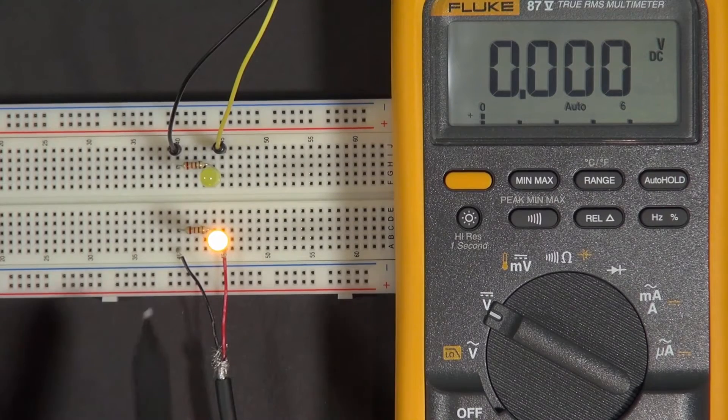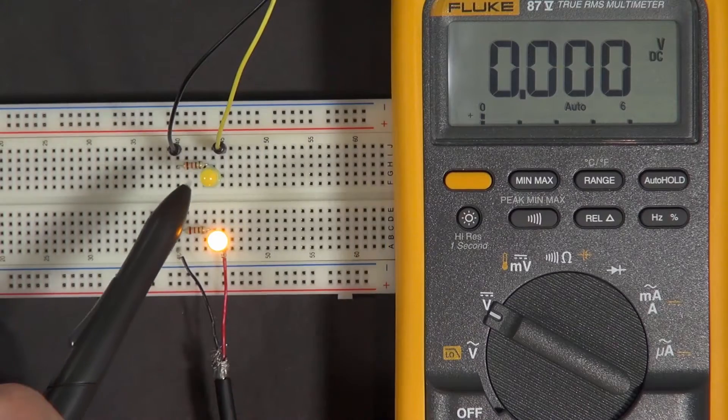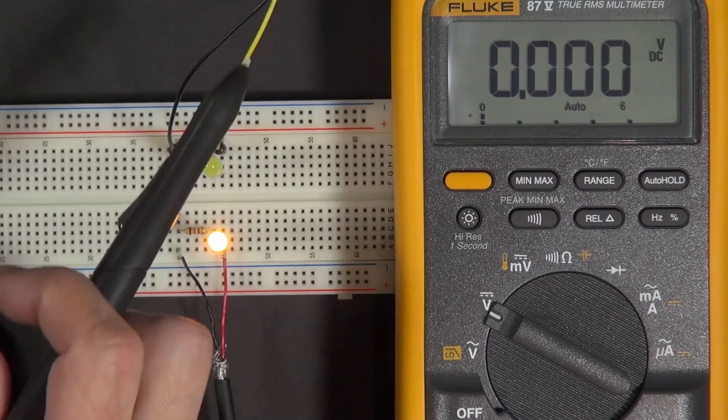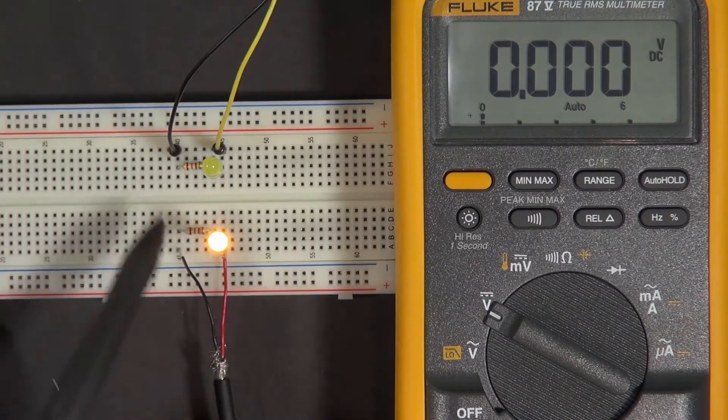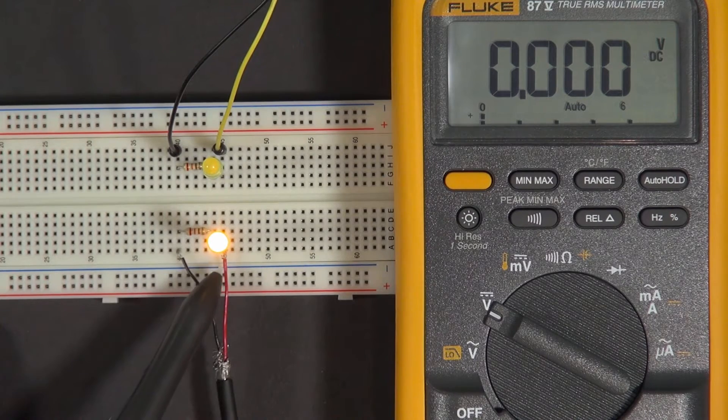In the last video we connected up these two different circuits, one that had a 5 volt signal switching on and off coming from some other circuit, and the other that had 5 volts coming from just a regular power supply.